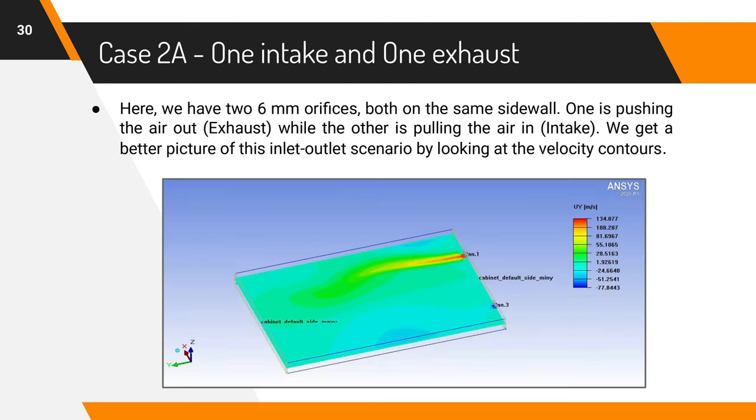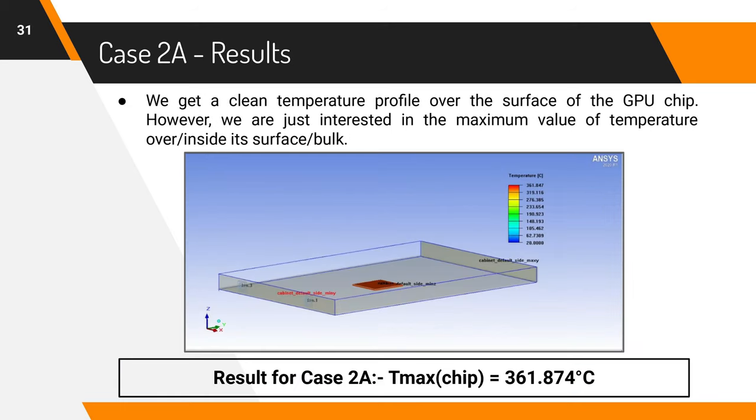Case 2A has two 6mm orifices, one of which sucks in air at the rate of 0.015 m³ per second and another which throws out air at the rate of 0.0075 m³ per second. This choice is based on literature review of similar studies. We visualize the geometry by looking at the velocity contour. A similar analysis involving meshing will let the chip temperature to be about 360 degrees Celsius.